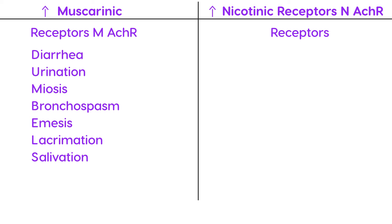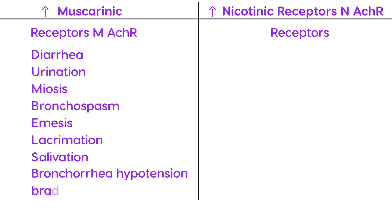A few additional muscarinic symptoms to mention: bronchorrhea (excess sputum), hypotension (low blood pressure), bradycardia (low heart rate), and vomiting. These represent the symptomatology of overstimulation of the muscarinic acetylcholine receptors.